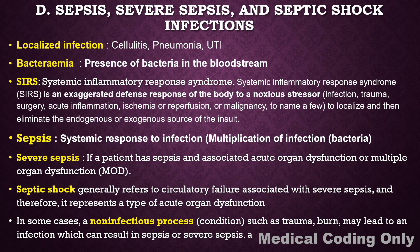SIRS is called Systemic Inflammatory Response Syndrome. What is the definition of SIRS? Let's read the third paragraph. SIRS — Systemic Inflammatory Response Syndrome — is an exaggerated defense response of the body to a noxious stressor, that is infection, trauma, surgery, acute inflammation, ischemia or reperfusion, or malignancy, to name a few.